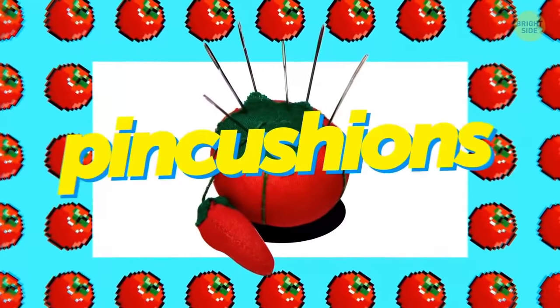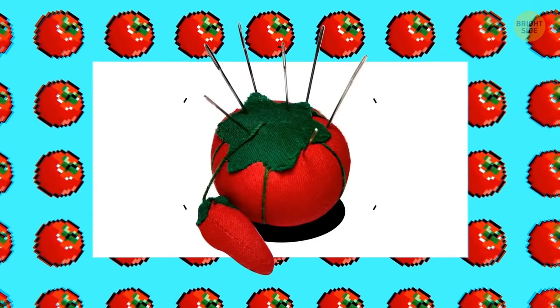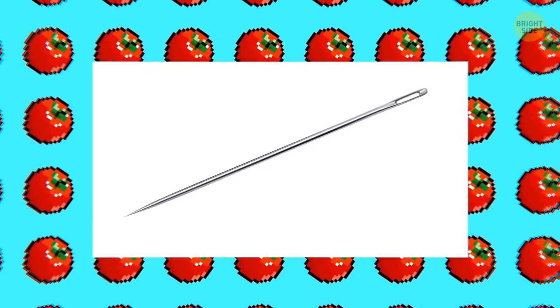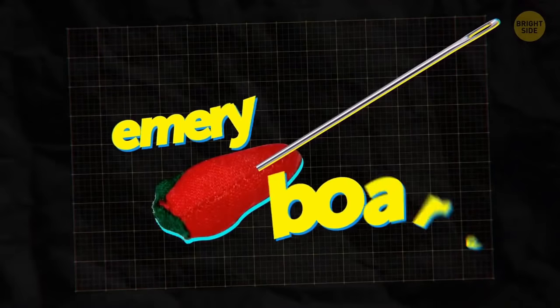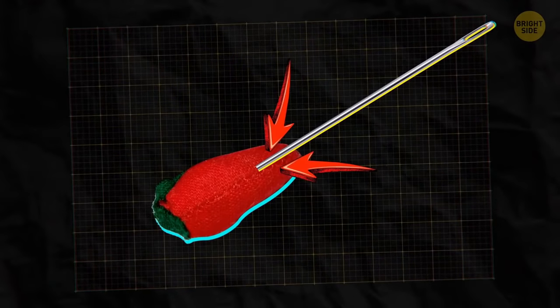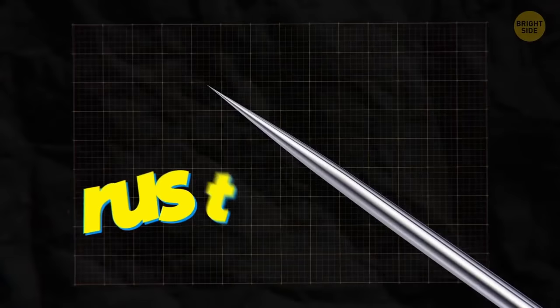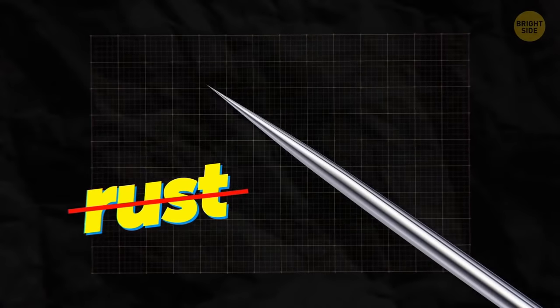Old-fashioned pin cushions that are large tomato with a strawberry attached are more than a place for your needles. The strawberry contains an emery board. When you stick your pins and needles into the strawberry, the emery board keeps them rust-free and sharpens them as well.